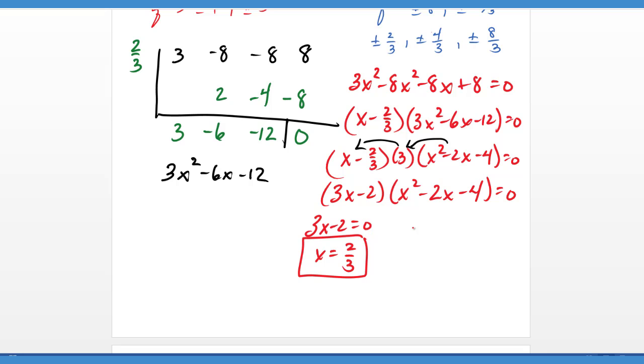However, the x squared minus 2x minus 4, this requires completing the square or quadratic formula. I'm going to go ahead and use completing the square here because I have a leading coefficient of 1 and an even B term.